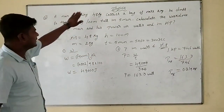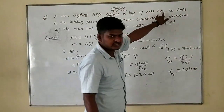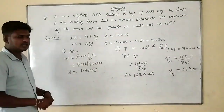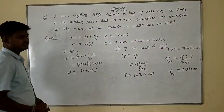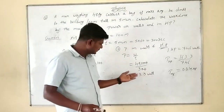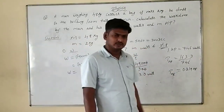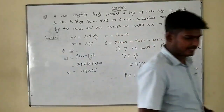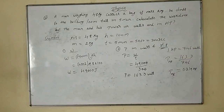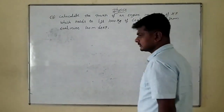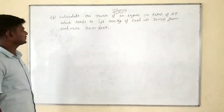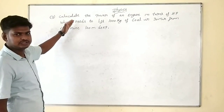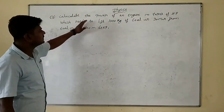Power is 0.219 HP. Clear? Simple problem — man mass is 48 kg, carrying bag of 2 kg. We can move to the next problem: calculate the power of an engine in terms of HP which needs to lift 1000 kg.